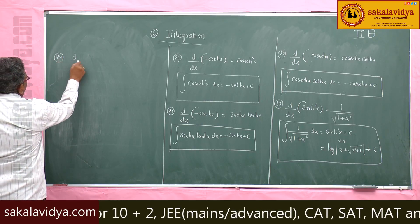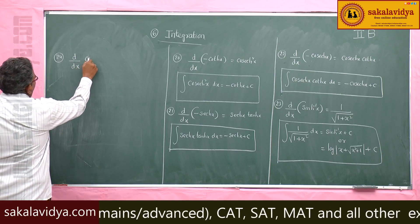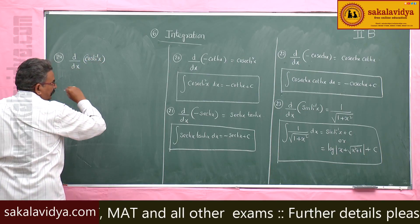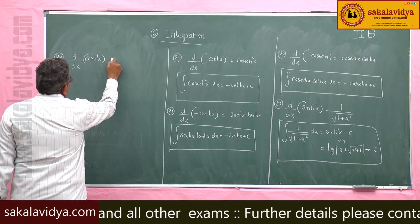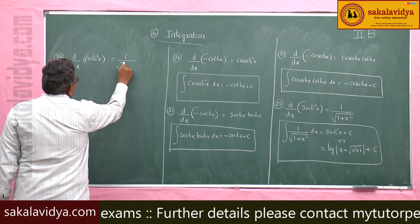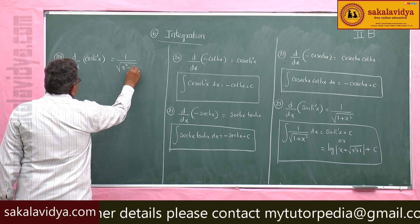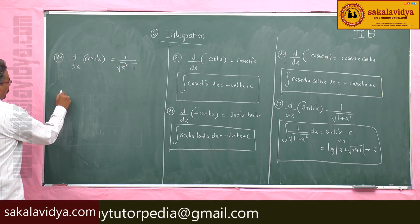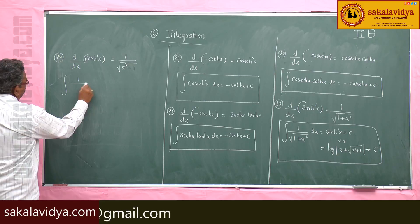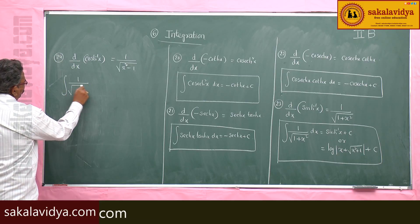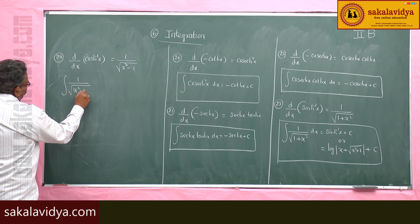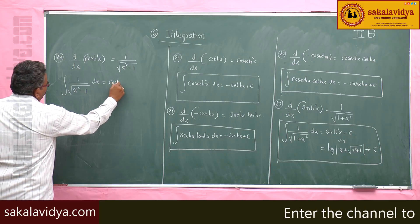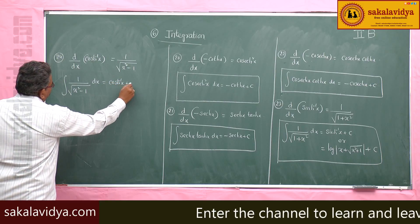d by dx of cosh inverse x is 1 by root of x squared minus 1. So, integral of 1 by root of x squared minus 1 dx is cosh inverse x plus c.